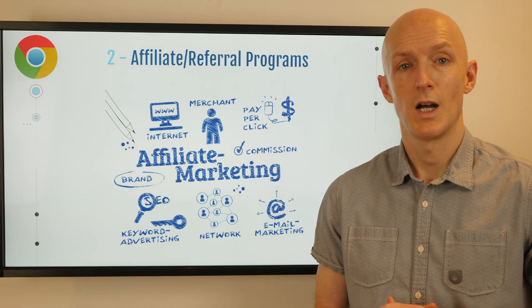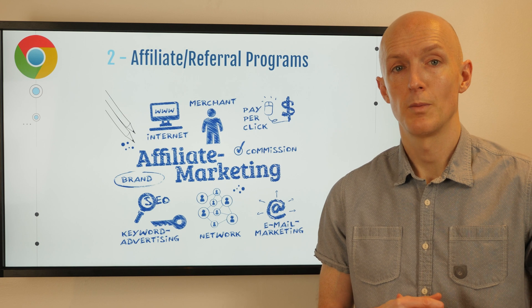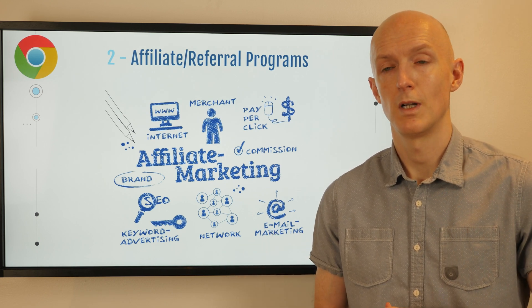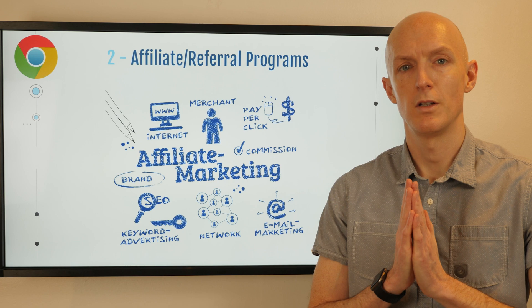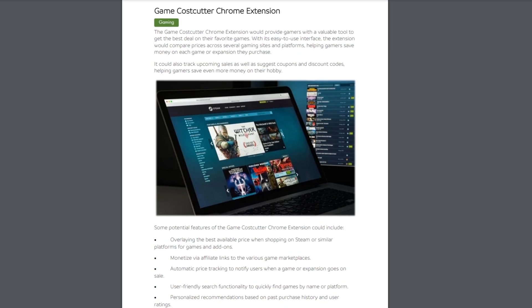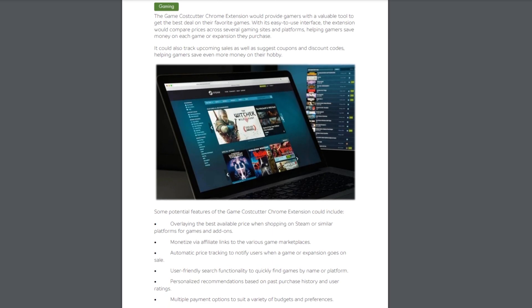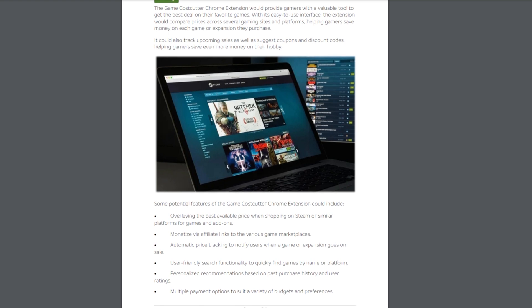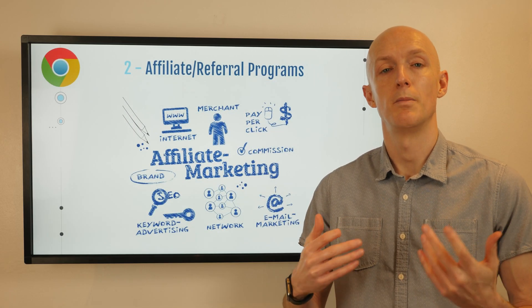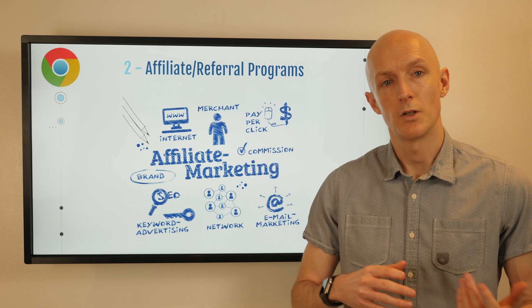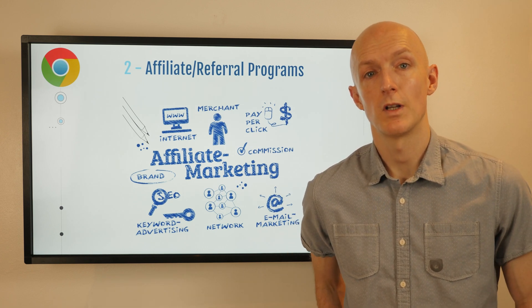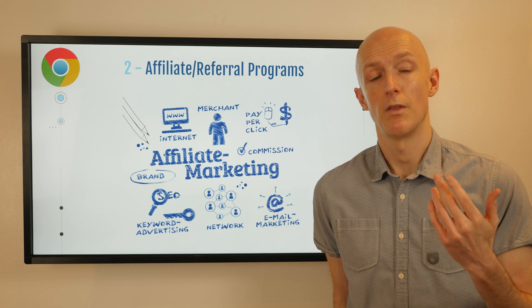You don't have to limit yourself to Amazon either — you could use a referral program from pretty much any company. For example, another idea in that PDF is a Game Cost Cutter Chrome extension, which compares prices across several gaming sites and platforms helping gamers save money on each game or expansion pack they purchase. You can monetize this via affiliate links to the various gaming marketplaces.